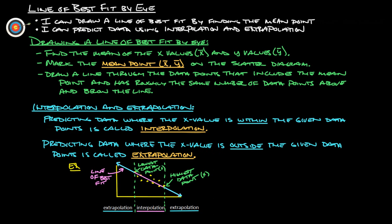Predicting data where the x value is outside of the given data points is called extrapolation. So let's say here's all of our data points. There's our lowest data point and here's our highest data point on the x-axis. If we're trying to figure out numbers in here, that would be interpolation. If you're trying to figure out values over here or over here, which is outside our data points, that would be extrapolation.